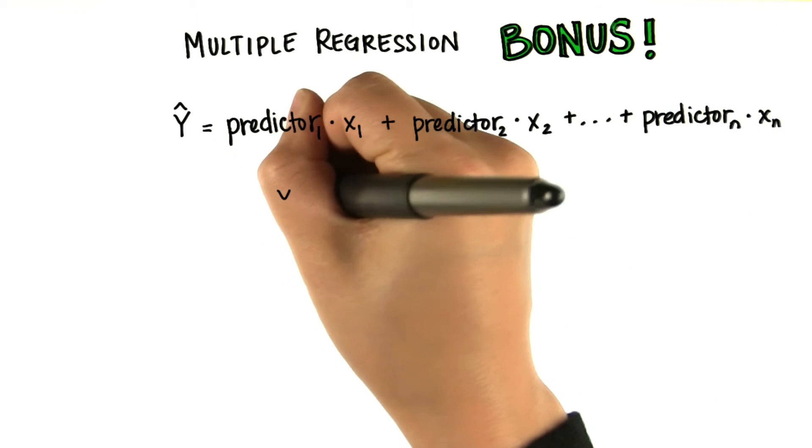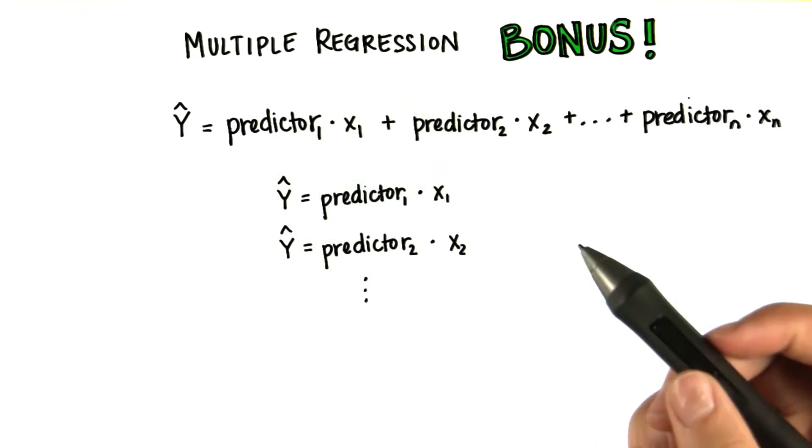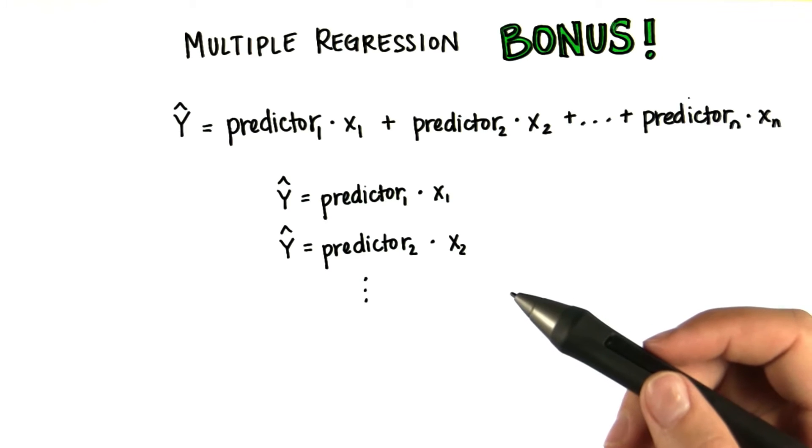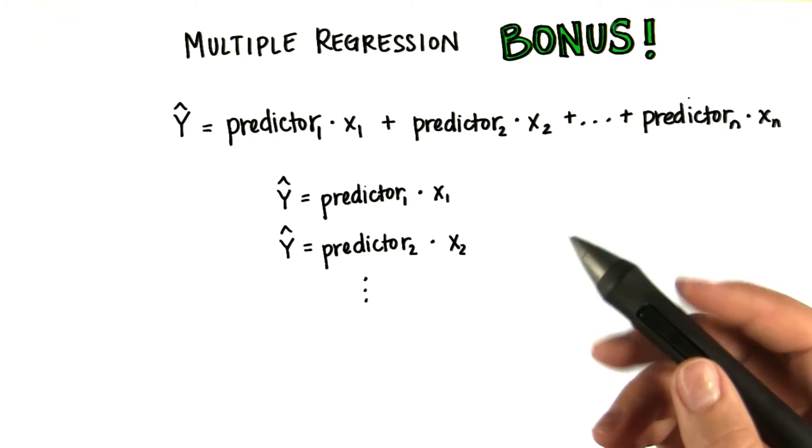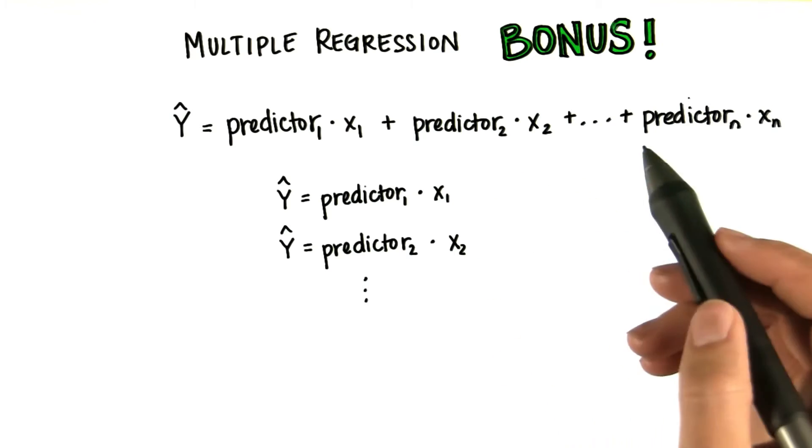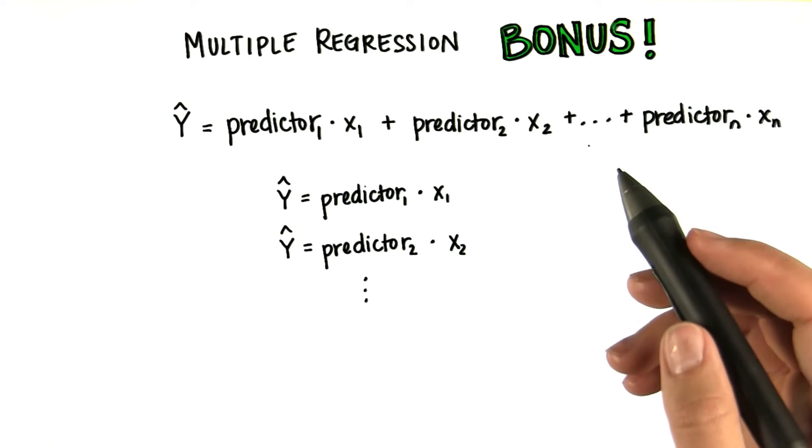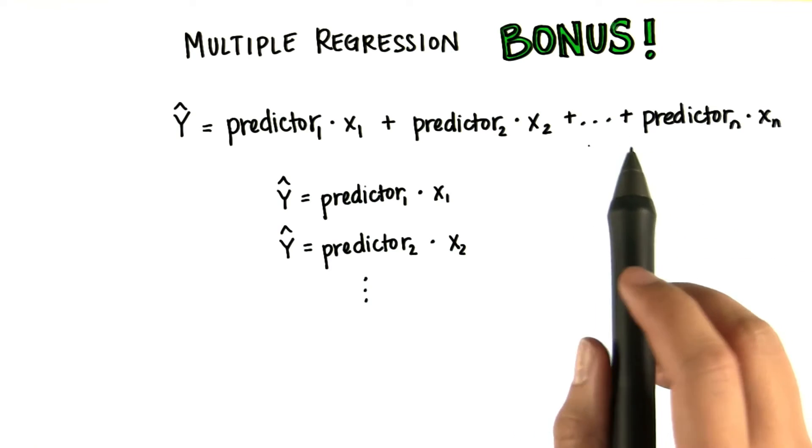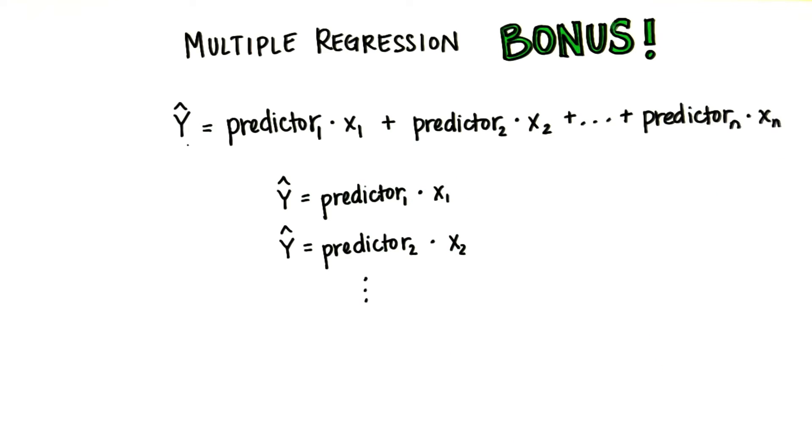Why don't we just do a simple linear regression for each one? The reason we just have one equation is not only because it's easier, but also because when we include several predictors, we can calculate the relationship that each predictor has with y independently of the other predictors.